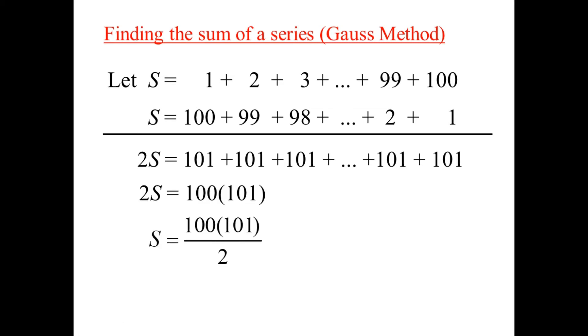That's twice what you want, so one time what you want is 50, 101s. 5050. He was done. Little seven-year-old Karl Friedrich Gauss.